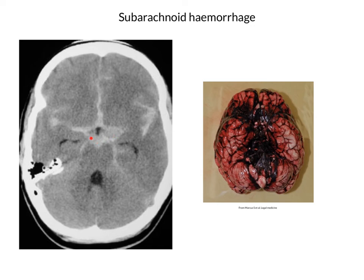In normality, because the basal cisterns are filled with CSF, they would appear black on CT — just like these little bits of the lateral ventricles appear, which have not been filled with blood.